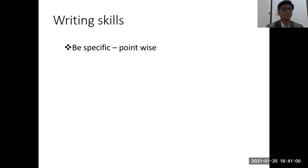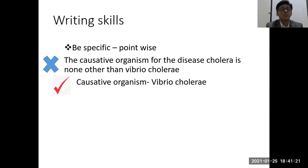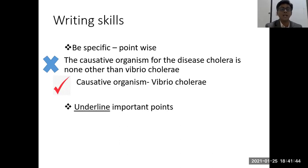Now coming to writing skills. The first and foremost is to be specific and point-wise. For example, if a question on cholera comes, instead of writing 'the causative organism for the disease cholera is none other than Vibrio cholerae,' simply write: causative organism — Vibrio cholerae. It is also necessary to underline important things to attract the examiner's attention, as the examiner reads the paper in your absence. Underlined words can earn you bonus marks.